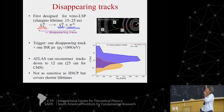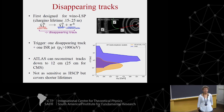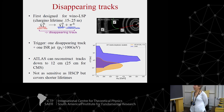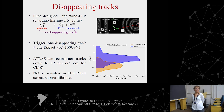One of the largest problems for disappearing track searches is the trigger: you need one disappearing track plus one ISR jet. The problem is that you cannot ask for a disappearing track at level-one trigger, so these searches are extremely limited because at the hardware level you cannot do tracking — you can only ask for the ISR jet plus missing ET. This will completely change for run four and five of the LHC because the track trigger will be coming online for both experiments, so expect heavy development in this area.